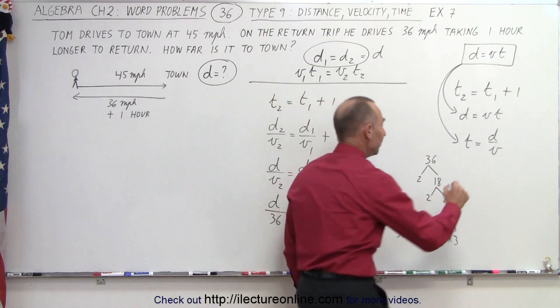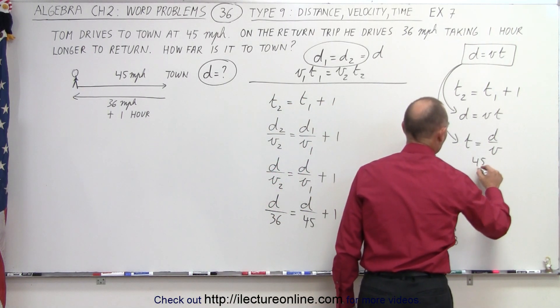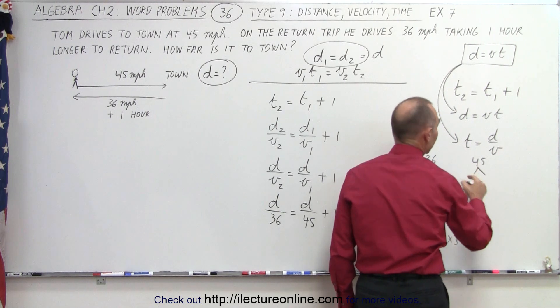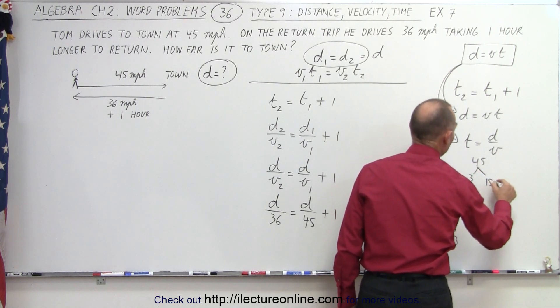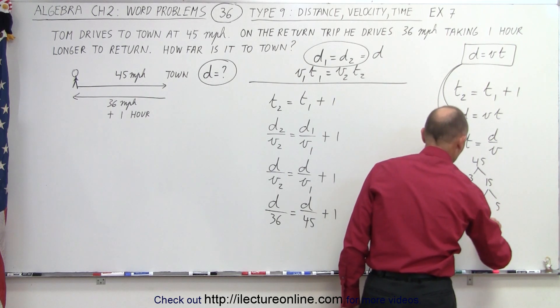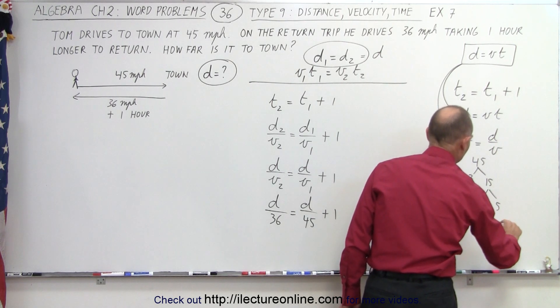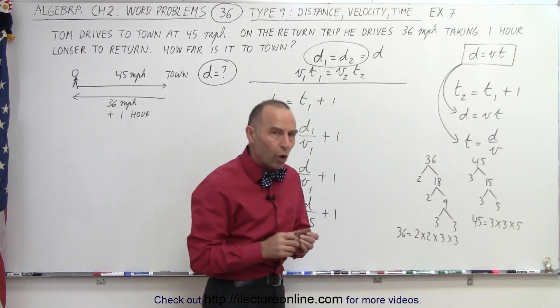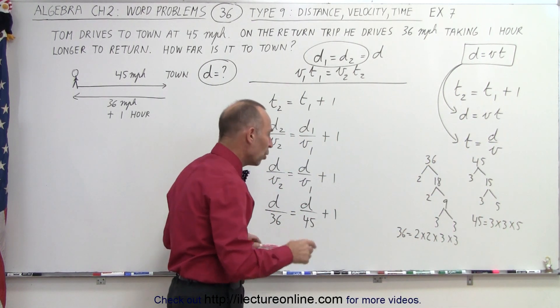And then we do the same for 45. 45, since that is not even, we can't divide by 2, but we can divide by 3. That gives us 15, which is still divisible by 3, which gives us 5. So therefore, 45 is equal to 3 times 3 times 5. And then we circle all the prime numbers that occur the most.